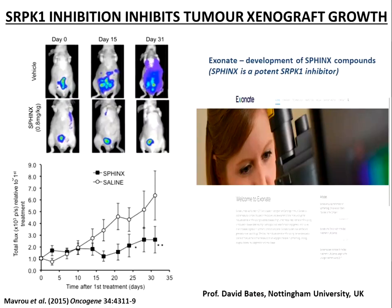Coming back to Exonate and Dave Bates' spin-out company in Nottingham: the Sphinx compounds are currently being used in clinical studies for the treatment of eye disease involving abnormal angiogenesis. By inhibiting SRPK1, there is strong evidence that novel drugs for eye diseases may be produced. The next step will be to explore these drugs as potentially novel anti-cancer drugs.